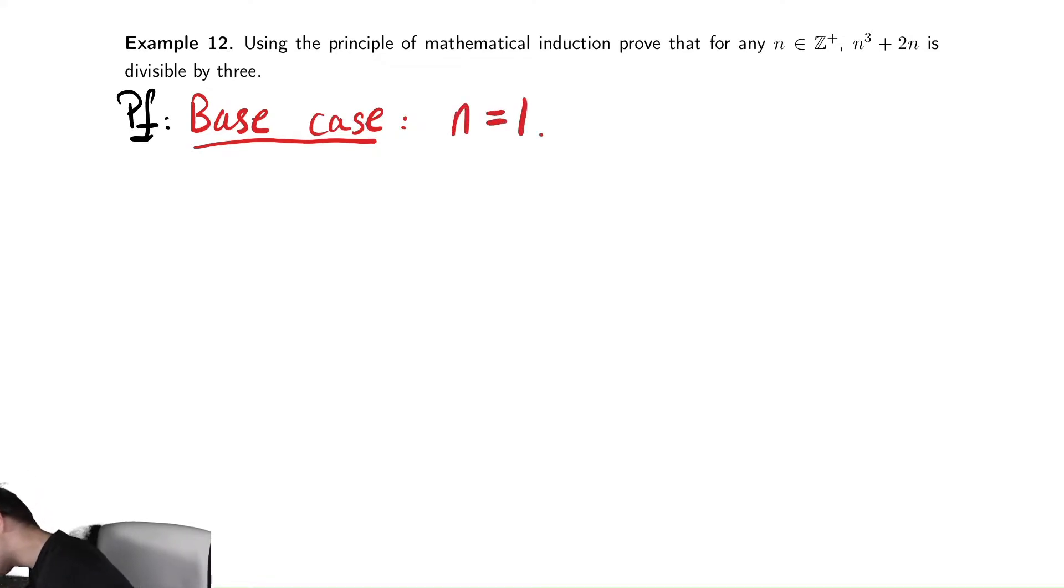This means that we need to check that 1 cubed plus 2 times 1 is divisible by 3. That's 3, which is divisible by 3, of course, which is divisible by 3.